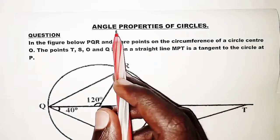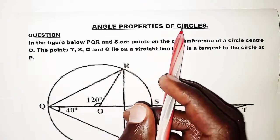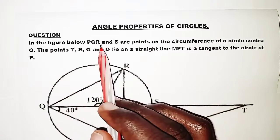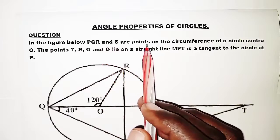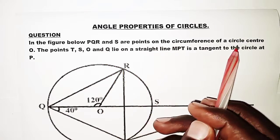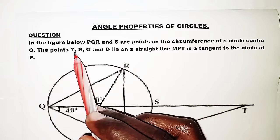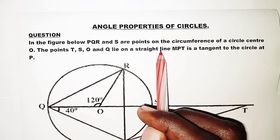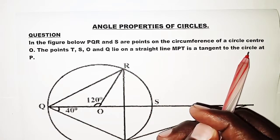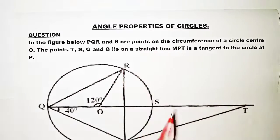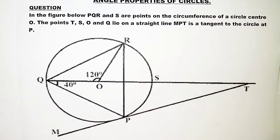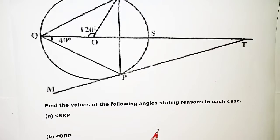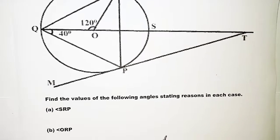Welcome. The topic today is angle properties of circles. The question reads: in the figure below, P, Q, R and S are points on the circumference of a circle with center O. The points T, S, O and Q lie on a straight line. MPT is a tangent to the circle at P, as shown in the diagram.